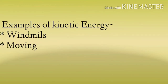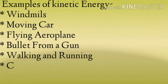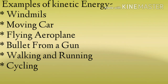Examples of kinetic energy: wind mills — जो हवा से wheels चलते हैं उनको हम wind mills बोलते हैं; moving car — जब कोई car move करती है तब वहाँ पर kinetic energy होती है; flying aeroplane — उड़ता हुआ हवाई जहाज़ — उसमें भी kinetic energy होती है; bullet from a gun — जब gun से bullet चलती है तो वहाँ पर kinetic energy होगी; walking and running — जब हम walk या run करते हैं, cycling करते हैं, तब वहाँ पर भी kinetic energy काम में आती है.